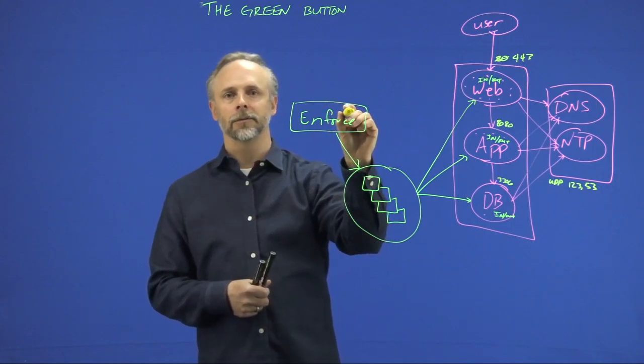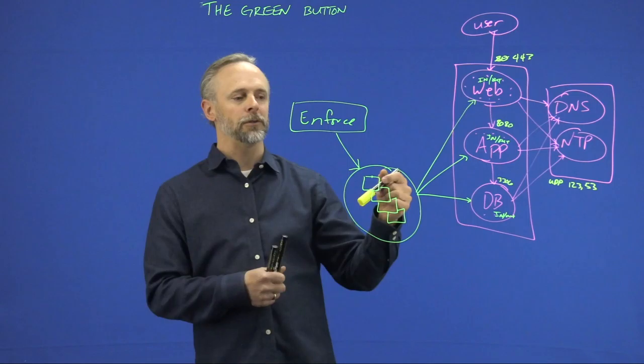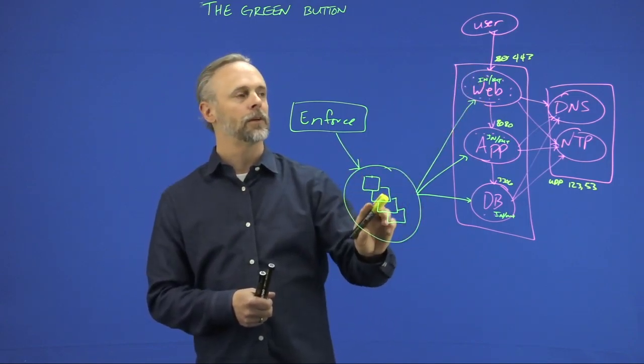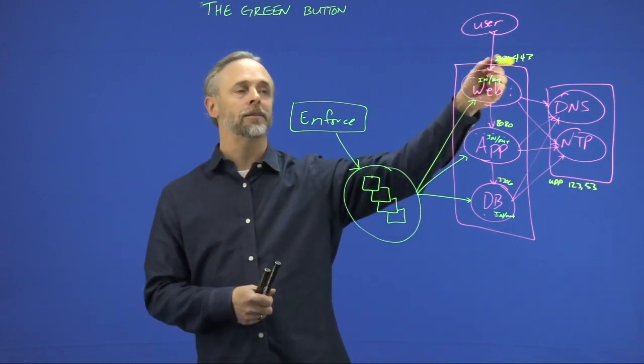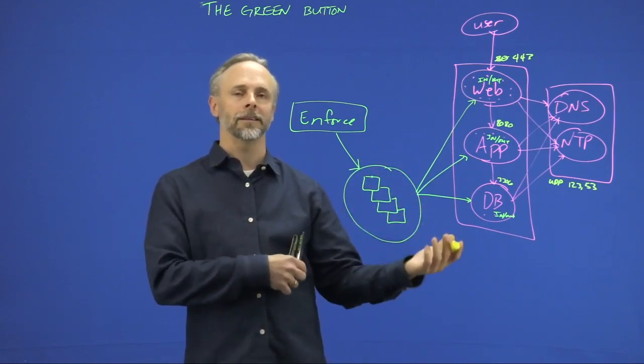Then we would go in and click the green button again and say, enforce the latest policy set. And what it would do is look at it and say, okay, the only thing that's really different is I've got some changes to the web servers. I push those rules out. It modifies the IP tables and IP sets to match what the current policy set is. And now you're basically enforcing the next set of policy.